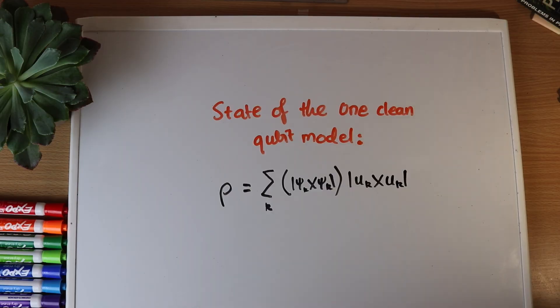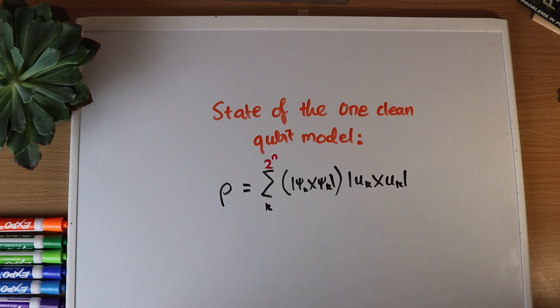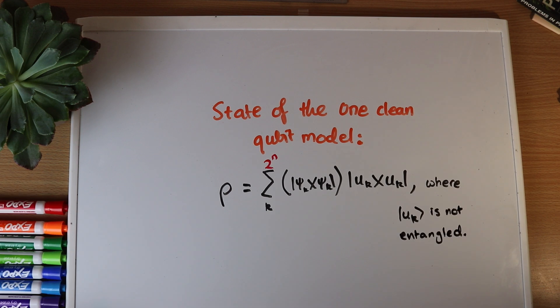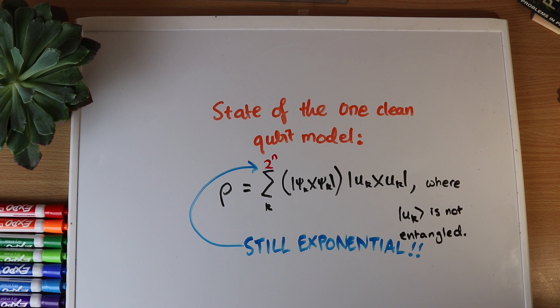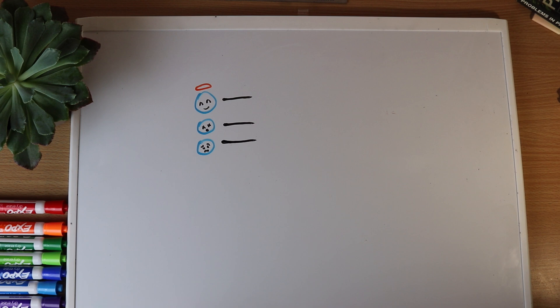Here's the state of the one clean qubit model — this is an exponential sum, so the amount of information you'd need to store to simulate it would be huge. And this is what I'd proved the state looks like without entanglement — this is still an exponential sum. That still looks pretty hard to simulate, though of course that's not a proof that it is in fact hard. There's always more than one way to write a state mathematically, and in some other form it could potentially simplify down. But I doubted that, so we tried to prove there really was no way to do it. We worked on this for ages and got nowhere, but were still totally convinced you could prove this state could not be simulated. It was one beautiful counter-example that turned things around.